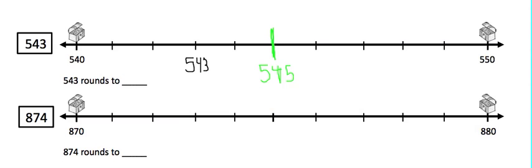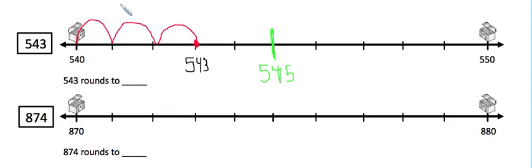Next, I need to figure out how far away 543 is from 540 and 550. First, let's see how far away it is from 540. We're going to start at 543 and jump backwards to 540, so count the jumps with me: one, two, three. So 543 is three numbers away from 540.